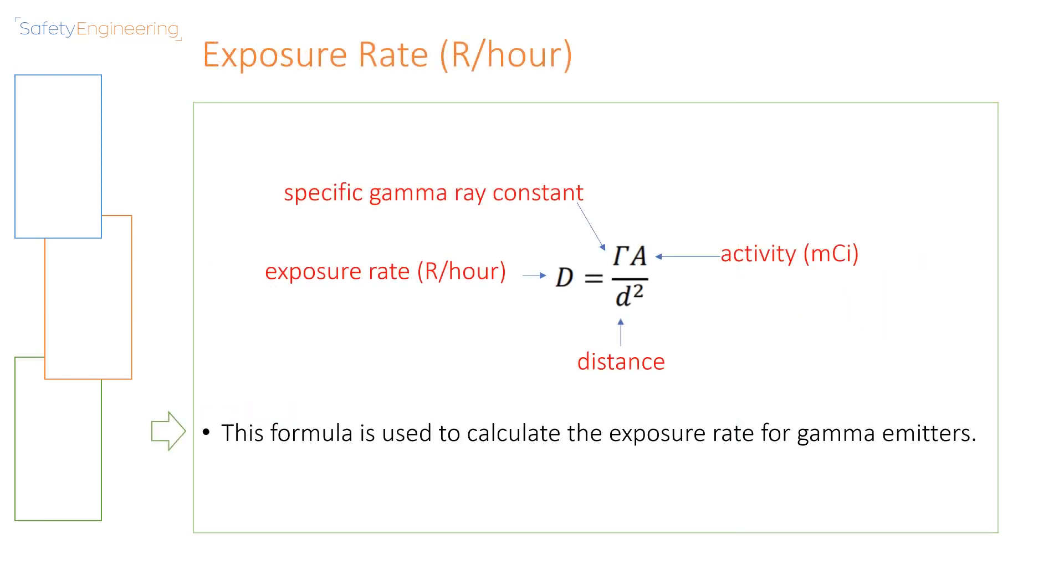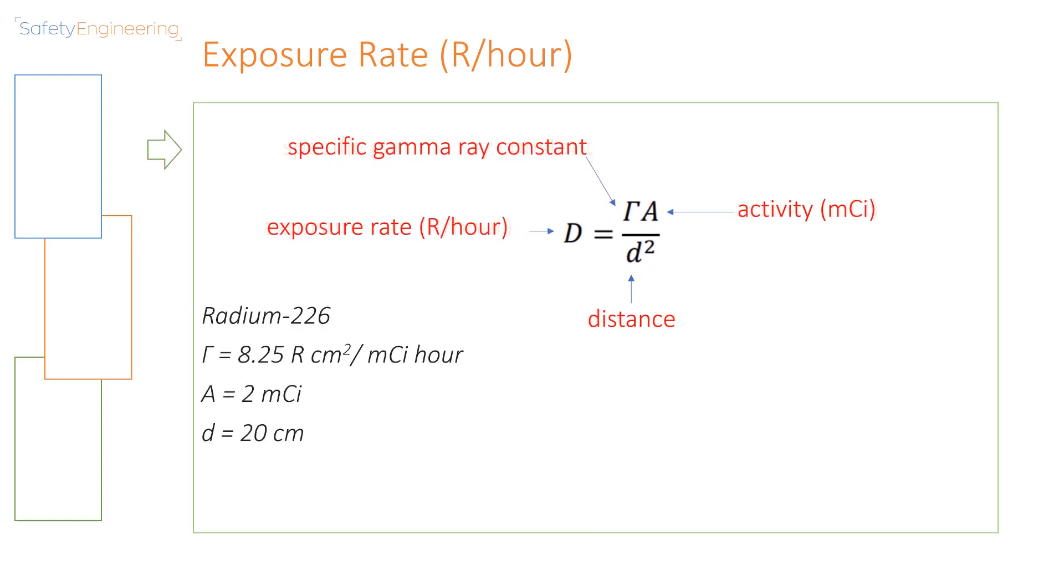Now this equation is the equation for exposure rate in Roentgen per hour. So D is the exposure rate in Roentgen per hour, Gamma is the specific gamma ray constant, A is the activity measured in millicuries, and D is the distance. This formula is used to calculate the exposure rate for gamma emitters. Now applying this formula is simply a matter of using the correct values in the correct location, and ensuring that you are using the correct units.